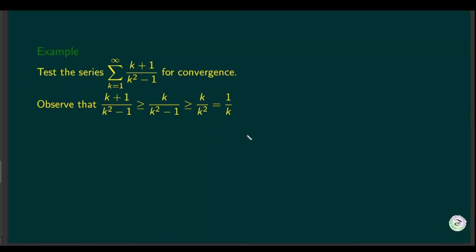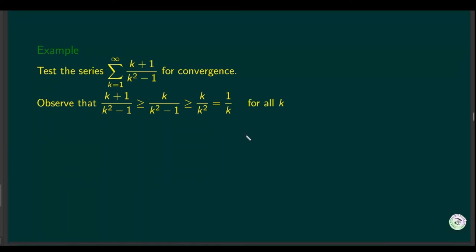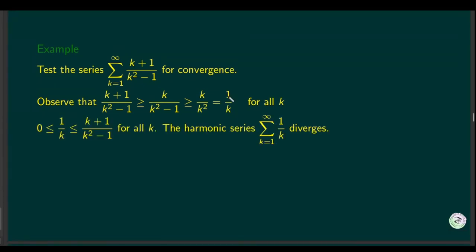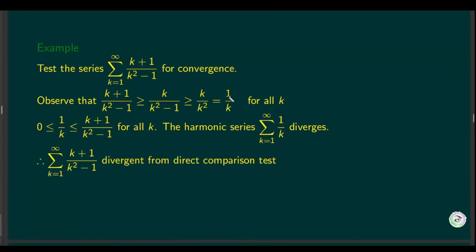This holds for all k with no additional restrictions. Since the harmonic series 1/k diverges, and the original series is greater than or equal to 1/k, by the direct comparison test, the original series also diverges.